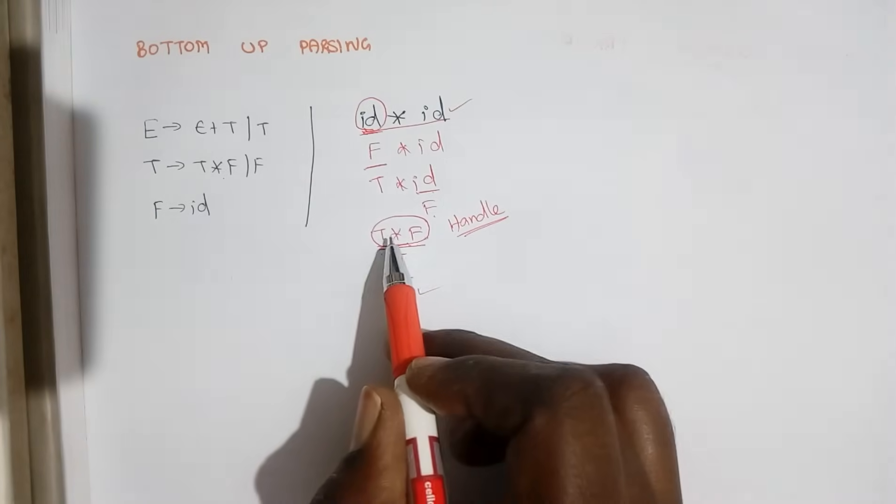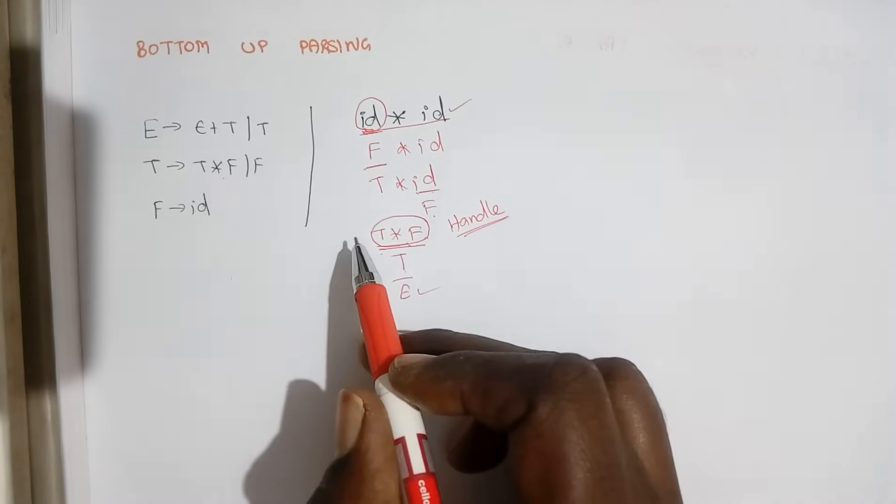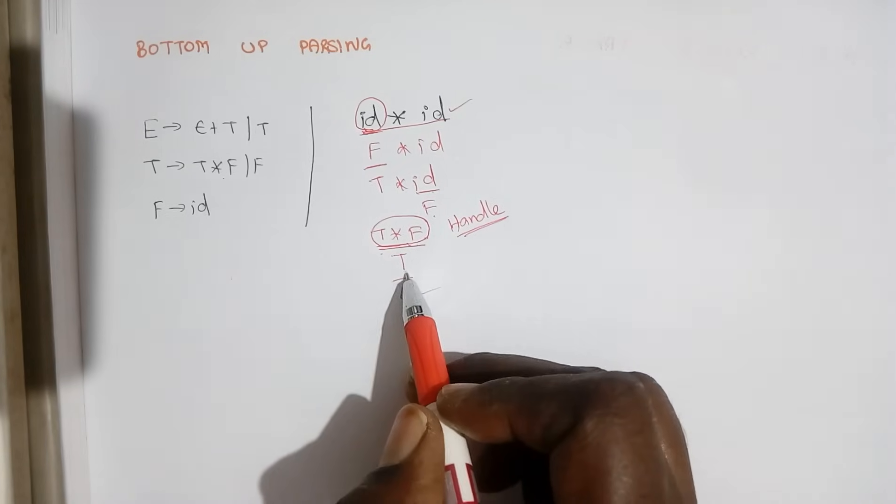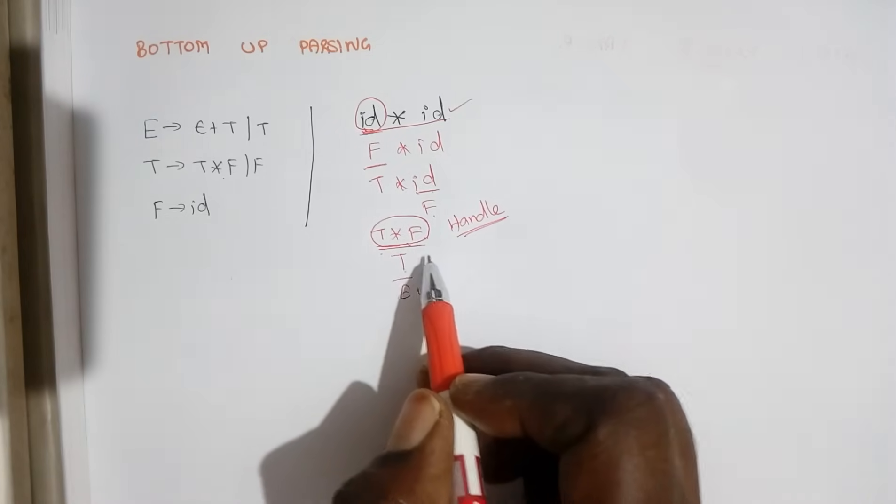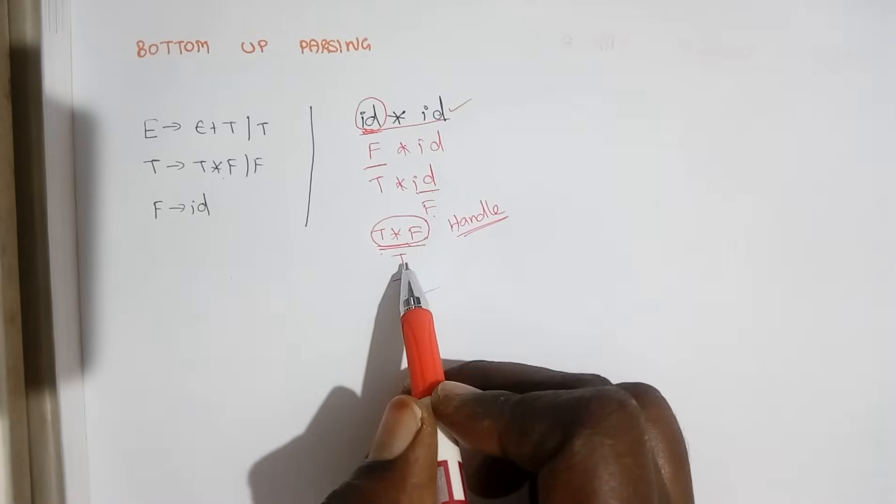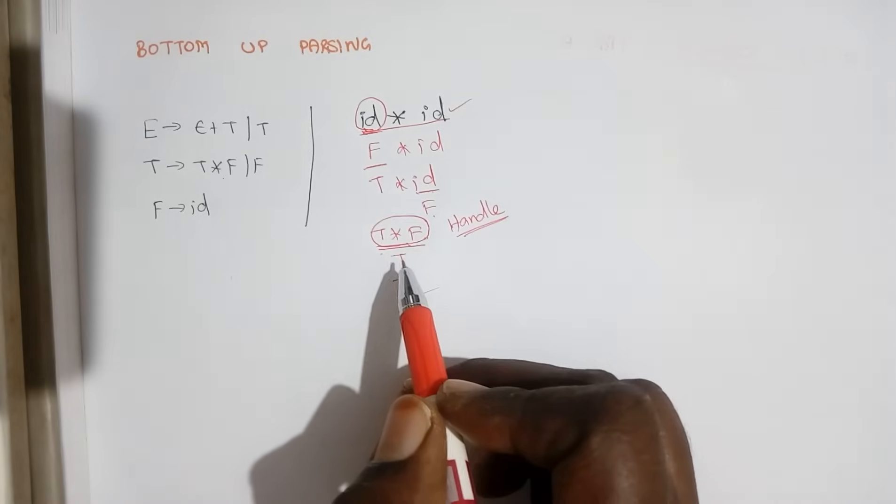Handle is something for which we apply a production rule and we reduce that to a variable. This way of reducing an input by using a handle each and every time is called handle pruning.